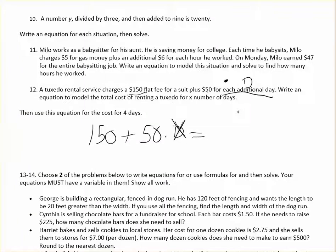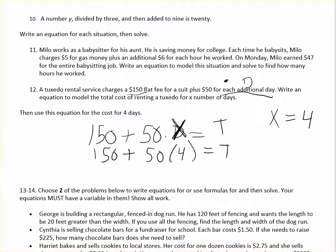So write an equation to model the total cost of renting a tuxedo for x number of days. Oh, so I'm supposed to write this as x number of days. And then it says, then use this equation for the cost for four days. So this is my expression. I guess this would equal the total cost. And then they want us to find the total cost of x equals four. I'm using t to stand for total cost here. So then I would take 150 plus 50 times four days. This is very expensive, by the way. But 150 plus 50 times four. And then you would have your total cost. I guess I'll let you finish that up.